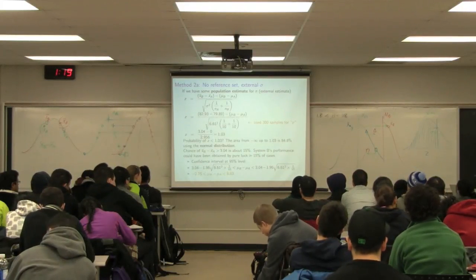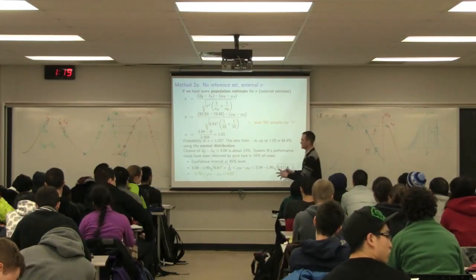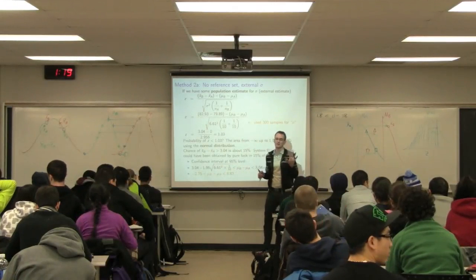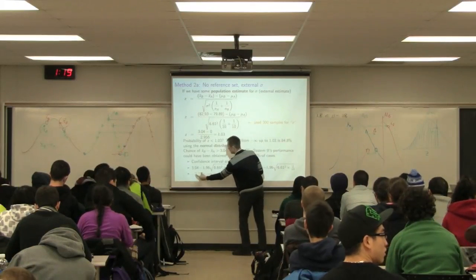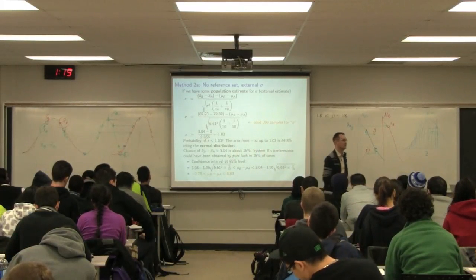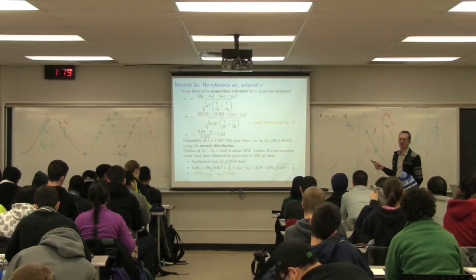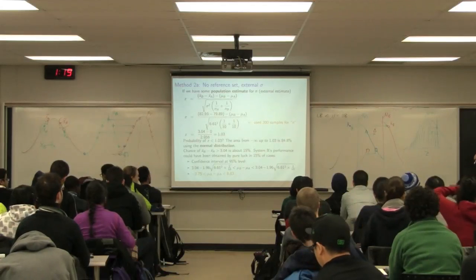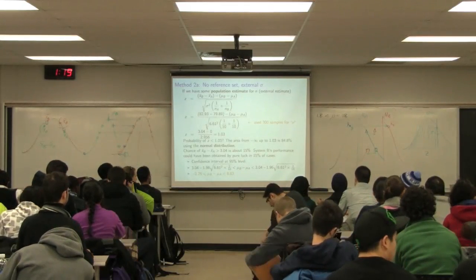Please go work through that derivation of confidence intervals — that's a great interpretation. The numeric values for this system are minus 2.75 to 8.83, which translates to about a 50% chance. Tomorrow's class we're going to revisit the topic of independence and try to relax that assumption.